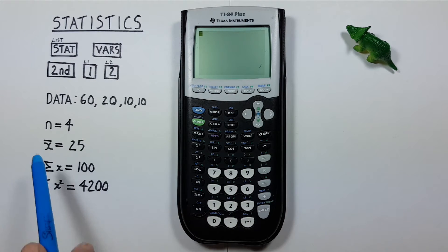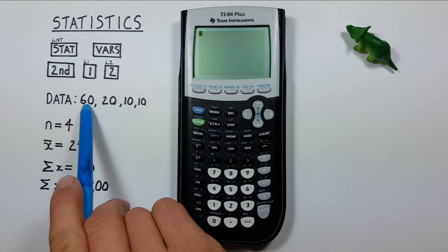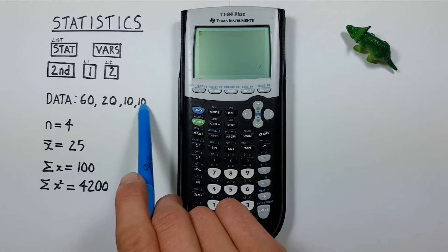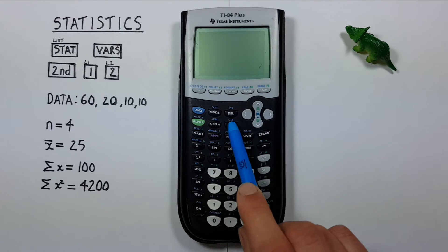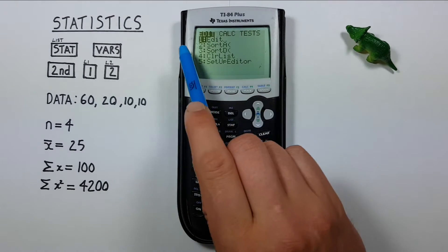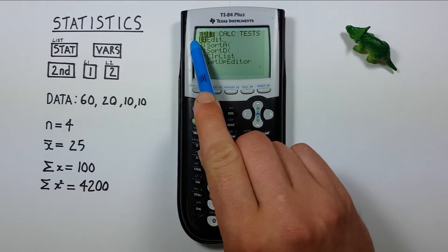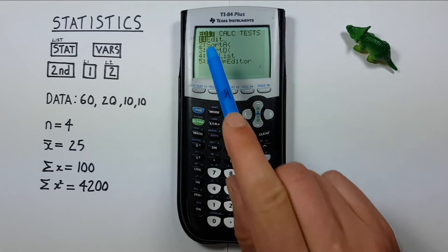For the examples shown we'll use this data set: 60, 20, 10, 10. To get started working with this data set, first we press the STAT key here. That brings us to this menu, and we want to select the first option which is EDIT, so we press ENTER.